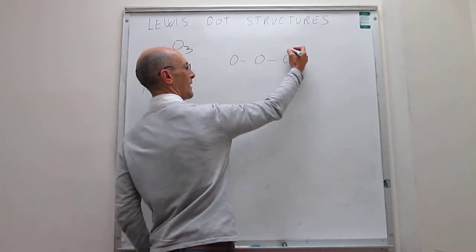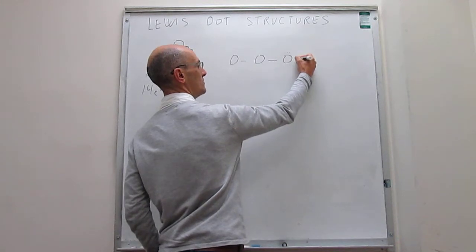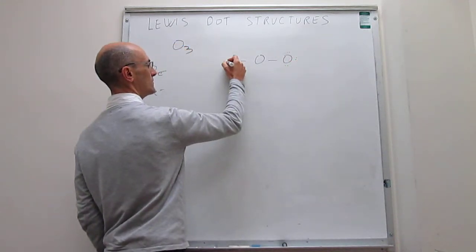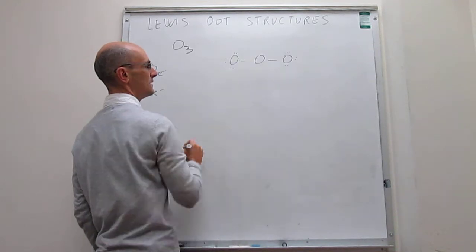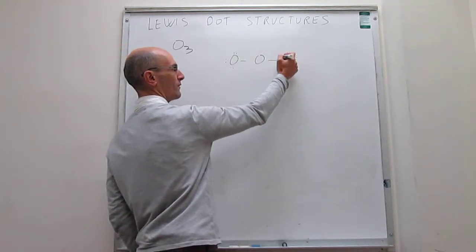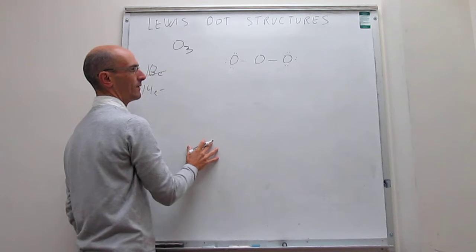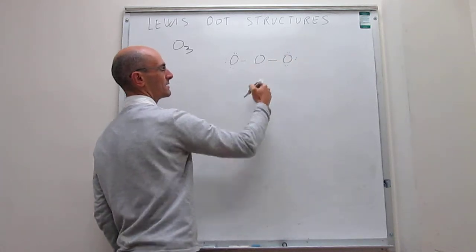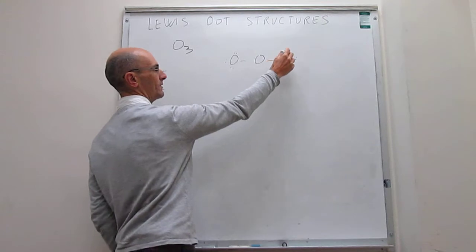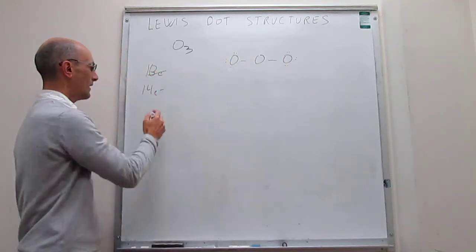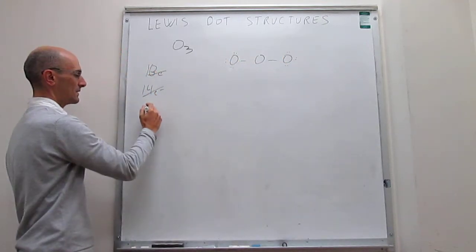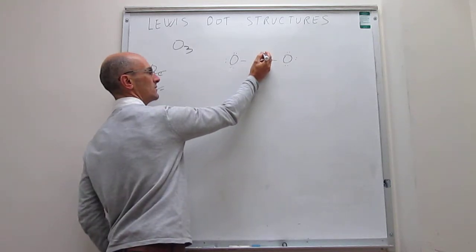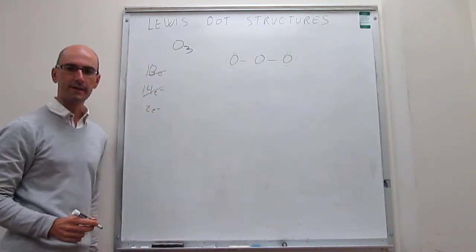Starting with the terminal atoms, we place lone pairs: two, four, six on one terminal and two, four, six on the other. Notice we can't put more than three lone pairs around each terminal oxygen atom because that completes the octet. That accounts for twelve electrons, so we still have two electrons left over, and those two electrons go to the central oxygen atom.